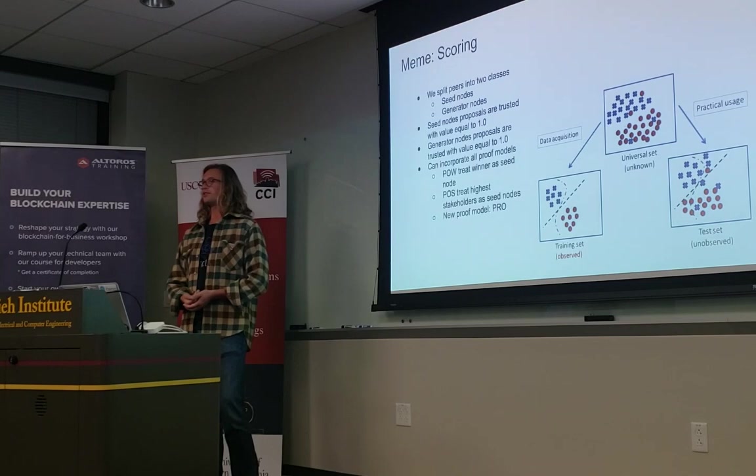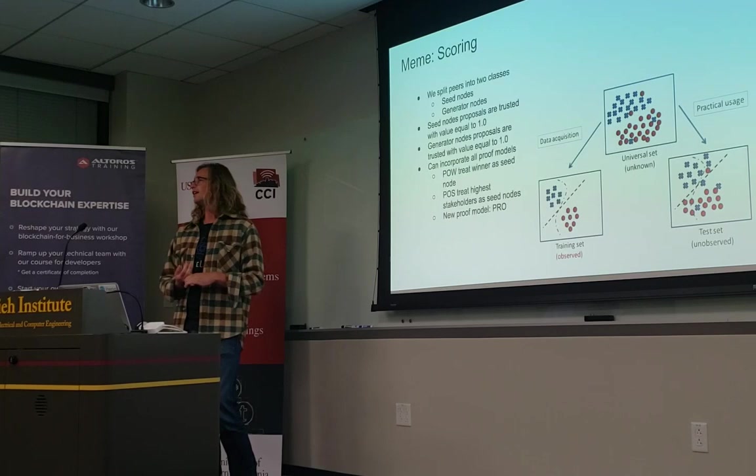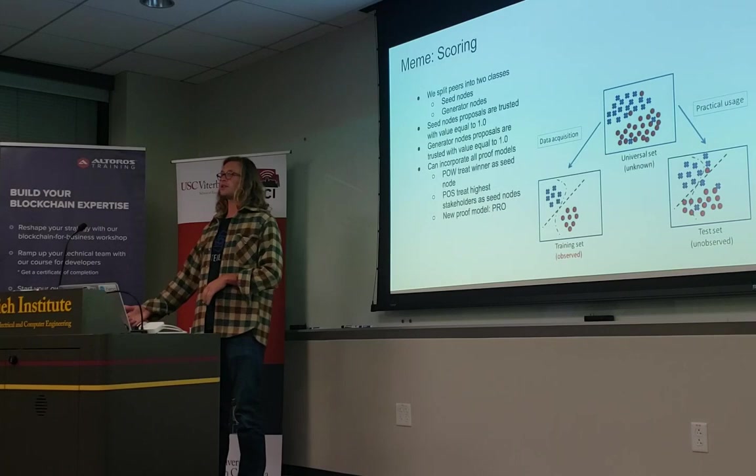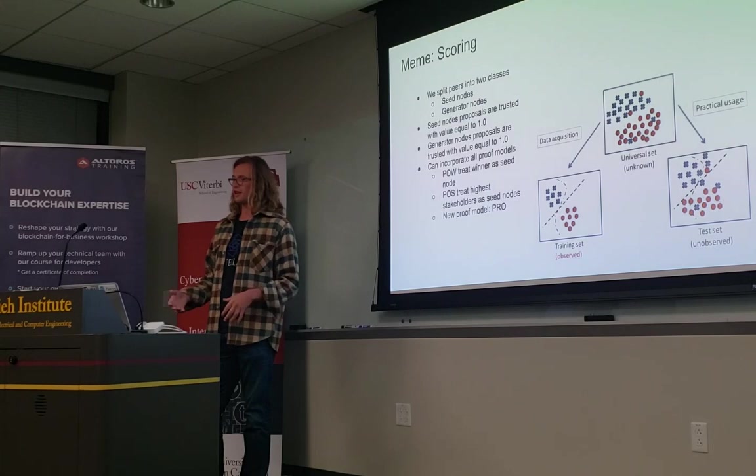If a node is consistently performing well — never timing out, never having reports of conflicts or misaligned data, never going offline — then we want the rest of the nodes to converge towards that behavior. We want to make sure that their exemplary behavior is reflected and that the rest of the network follows.